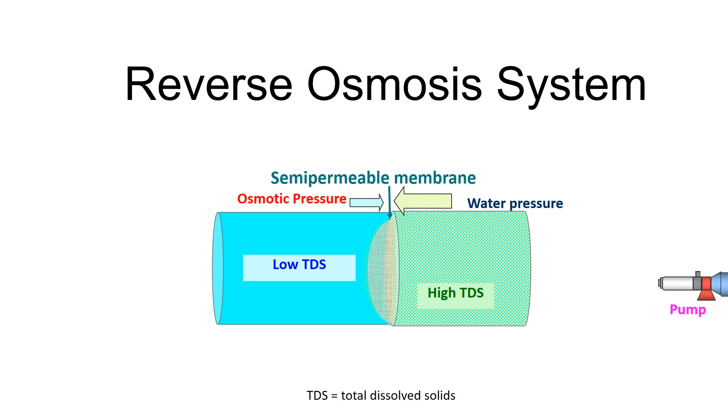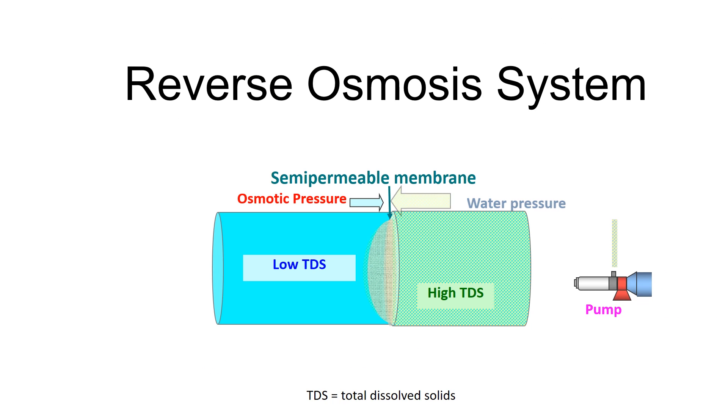In a closed vessel, osmosis is reversed by using a pump to pressurize the salty water.